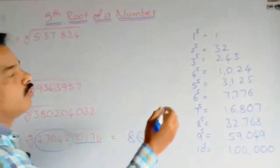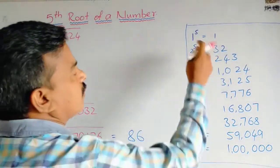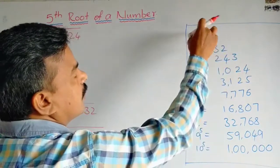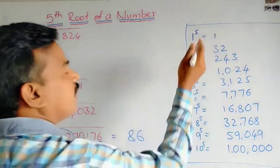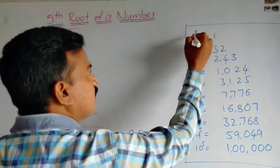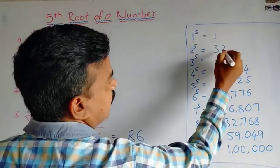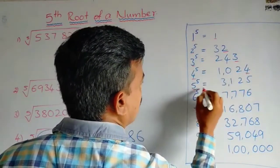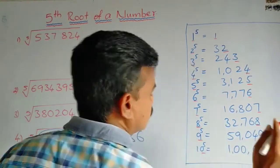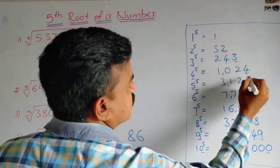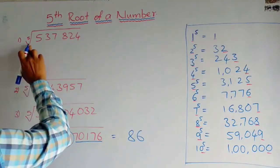To do this, we first have to keep in mind this table. These are the fifth powers: 1 to the power of 5, 2 to the power of 5, and so on. We can observe that if a number ends with 1, its fifth power also ends with 1. Similarly: 2→2, 3→3, 4→4, 5→5, 6→6, 7→7, 8→8, 9→9, 0→0. You must keep this chart with you.